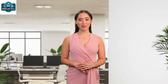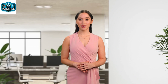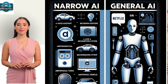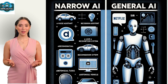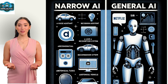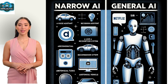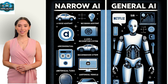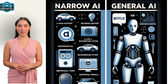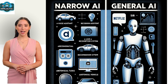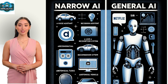AI can be categorized into two main types: narrow AI and general AI. Narrow AI, or weak AI, is designed to perform specific tasks. Examples include virtual assistants like Siri and Alexa, recommendation systems on platforms like Netflix and Amazon, and autonomous vehicles. These systems operate within a limited scope.